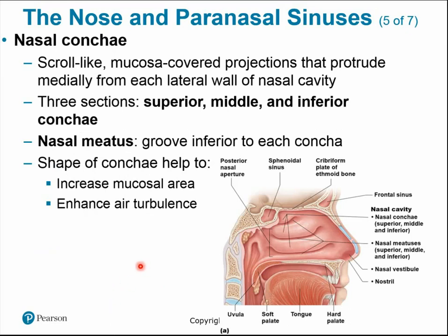The nasal conchae are projections or ridges in the wall of the nasal cavity — superior, middle, and inferior. The nasal meatus refers to the grooves between these conchae. The shape of the nasal conchae increases mucosal surface area and increases air turbulence, so instead of air taking a straight path from nostril to throat, it spins around a bit, which helps warm and moisten the air before it reaches the deeper structures.